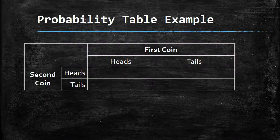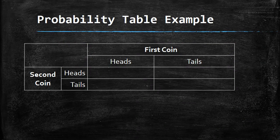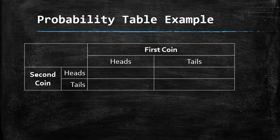To start off with probability tables, we're going to start by making an example one, and we're going to look at what would happen if we flipped two separate coins.